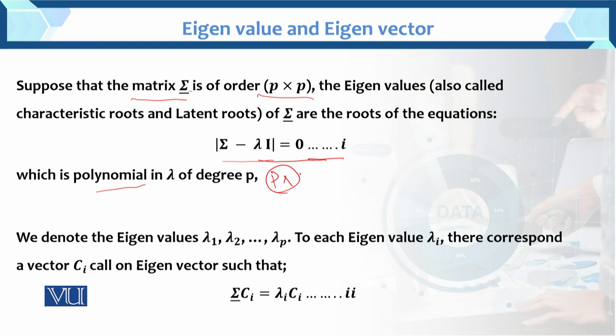These p roots are called the eigenvalues of matrix Σ. The eigenvalues of Σ are the roots of the characteristic equation, which is a polynomial equation with p roots. These p roots are the eigenvalues of matrix Σ.